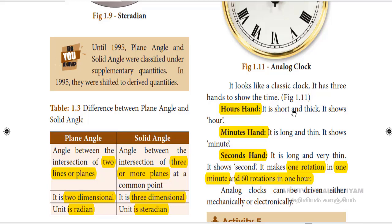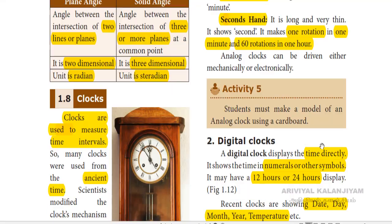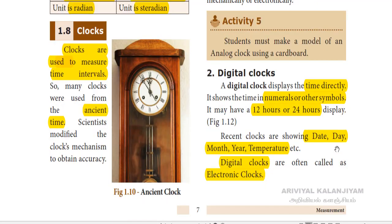In analog clocks, the hour hand is short and thick — it shows the hour. The minute hand is long and thin — it shows the minute. The second hand is long and very thin — it shows the second, completing one rotation in one minute and sixty rotations in one hour.